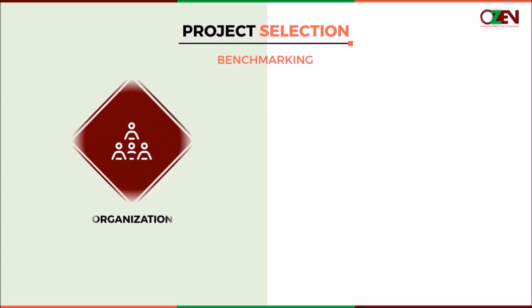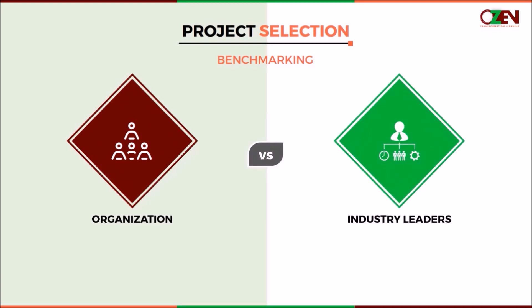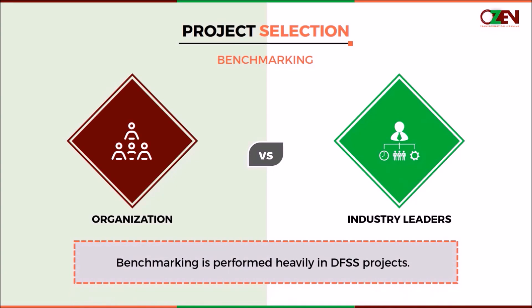Benchmarking is the process of comparing an organization's business processes, practices, and performance metrics with those of industry leaders. This is an activity performed heavily in Design for Six Sigma, or DFSS, projects, but is sometimes necessary for DMAIC projects as well. DMAIC breaks down to define, measure, analyze, improve, and control.